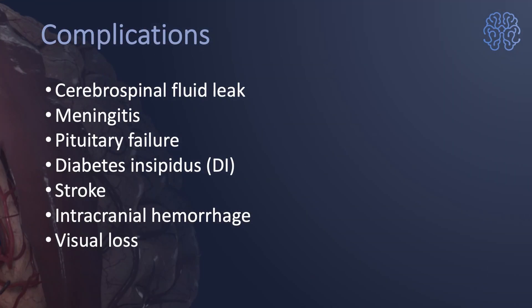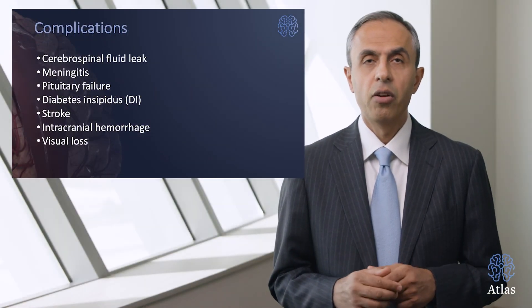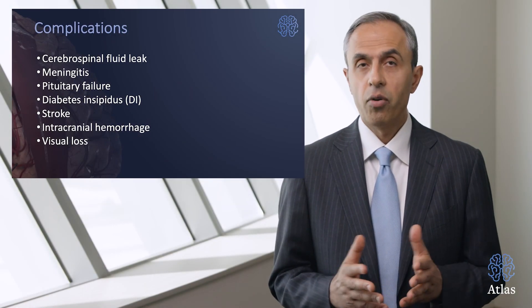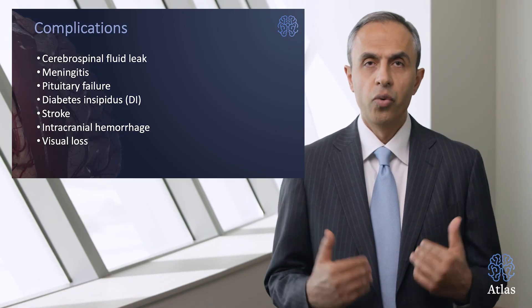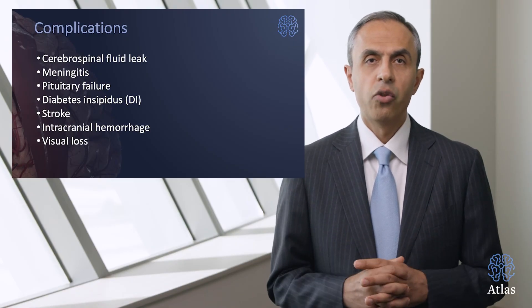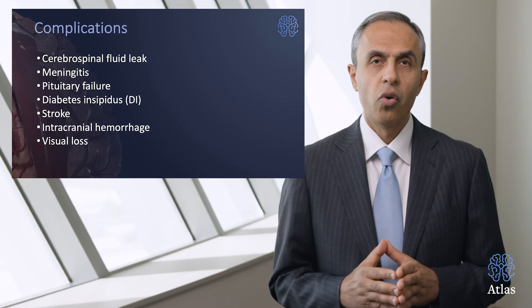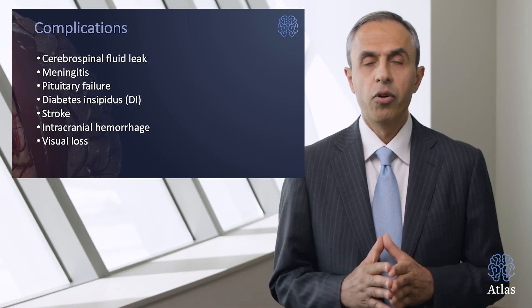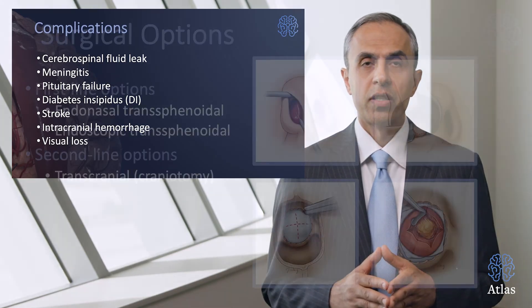What are the complications related to surgery? They can include brain fluid leak through the nose, meningitis or infection in the brain, pituitary failure, permanent diabetes insipidus — meaning urinating too often and too much — and very rarely stroke, intracranial hemorrhage, blindness, and visual loss.